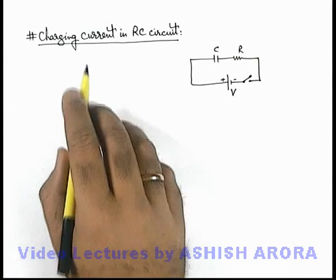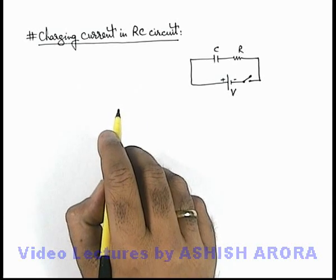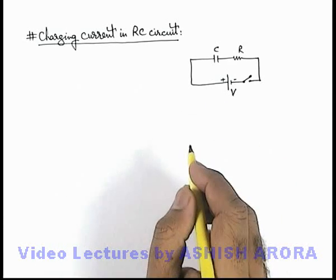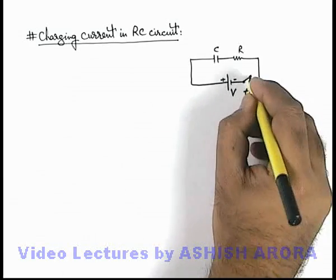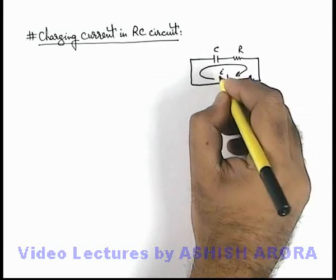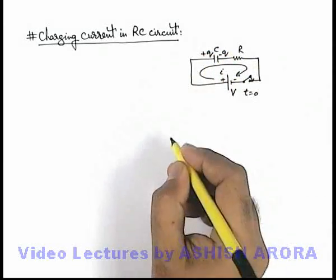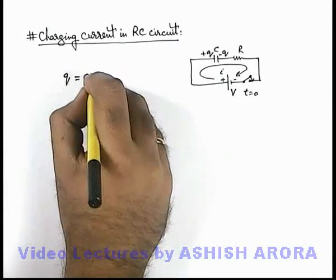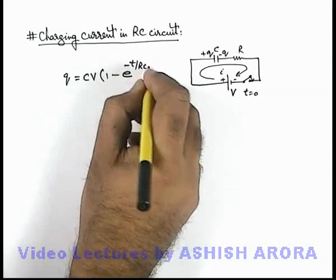Let us discuss the charging current in a given RC circuit. This is a similar circuit which we have discussed in previous sections. Here, if at t equal to zero we close the switch, the battery supplies a current which decreases with time as charge on the capacitor increases. We have already obtained that capacitor charge is given as Q = CV(1 - e^(-t/RC)).